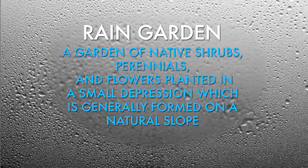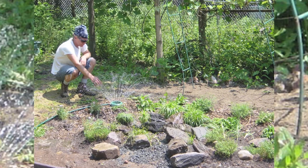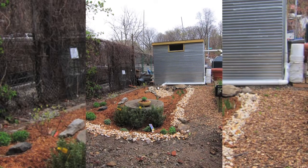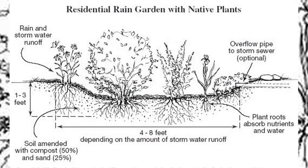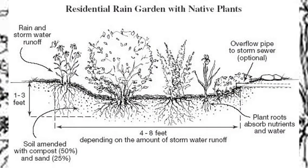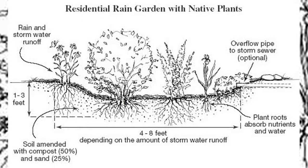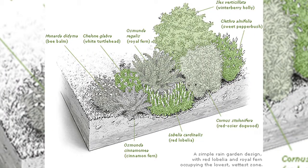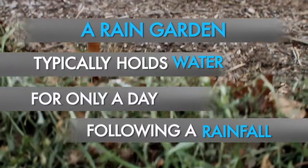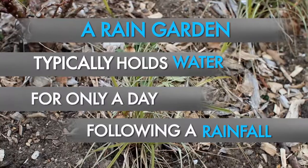A rain garden is a garden of native shrubs, perennials, and flowers planted in a small depression, which is generally formed on a natural slope. The purpose of a rain garden is to temporarily hold water runoff. You want to make sure that whatever plants you choose for your rain garden can really tolerate a sort of drought-and-drench lifestyle.